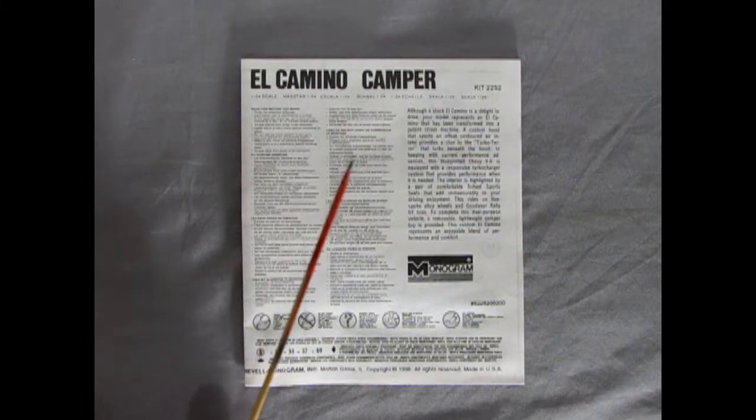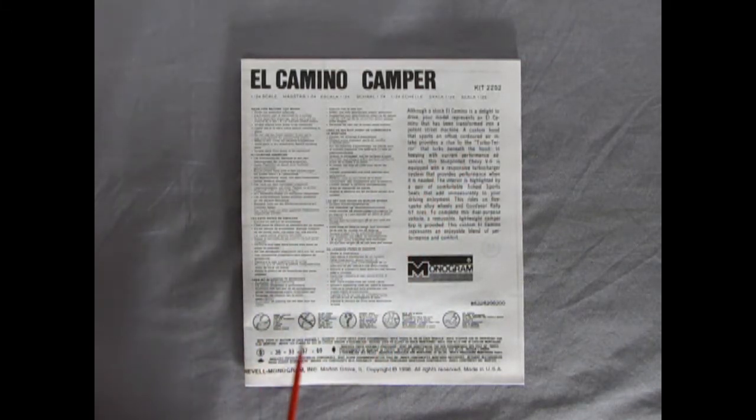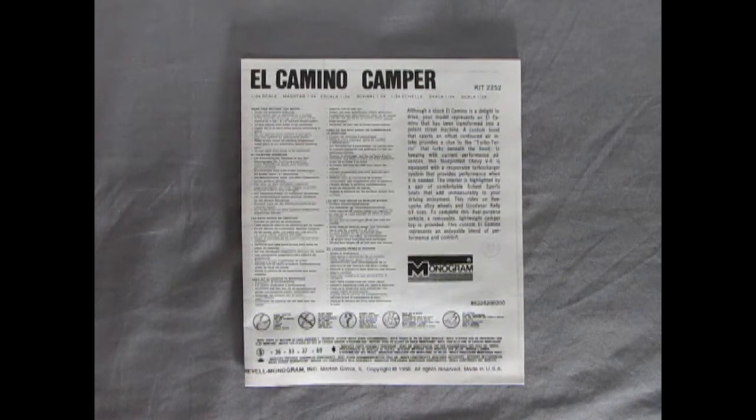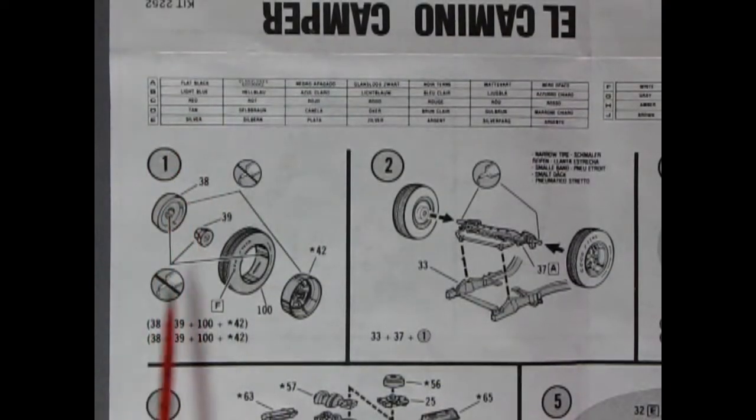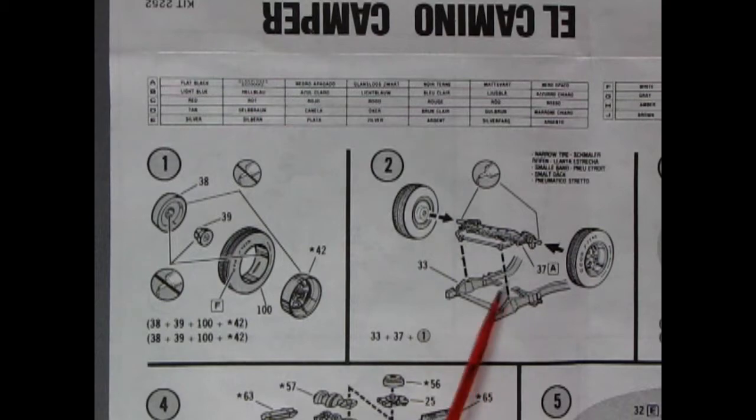Our instruction sheet for the El Camino Camper has this really nice write-up about the vehicle as well as all the symbols and other instructions we will need in order to assemble our model. We get some paint call-outs as well as our wonderful assembly of our four-piece wheels and then they all hook onto the front axle which drops down on the frame.